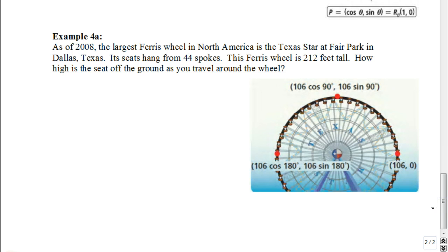And lastly, let's talk about this Ferris wheel problem. The book explains this a little bit differently than the way that I'm going to. I'm just going to make sure that I try to make this as simple as possible. So it says, as of 2008, the largest Ferris wheel in North America is the Texas Star at Fair Park in Dallas, Texas. Its seats hang from 44 spokes. This Ferris wheel is 212 feet tall. How high is the seat off the ground as you travel around the wheel? Now, with this problem, we have to make some assumptions.